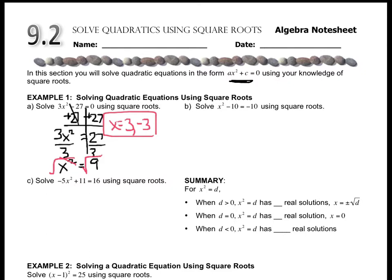Example B, drop a line, add 10. X squared equals 0. And now when I go to square root, I only have one answer because 0 only has one square root. There's no such thing as negative 0.